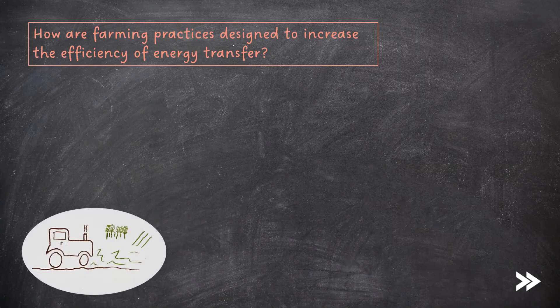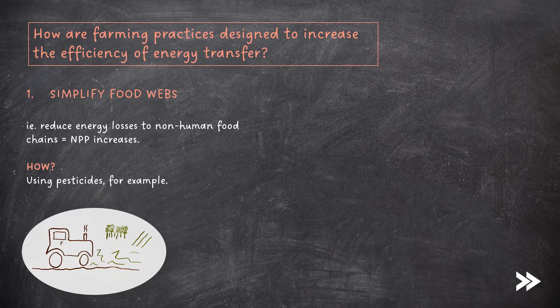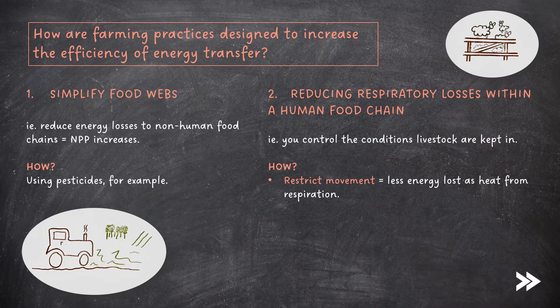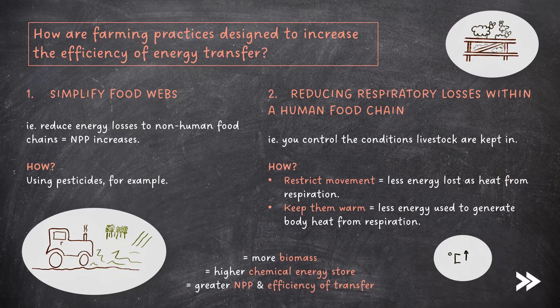Because so much energy is lost at each trophic level, farming practices are designed to maximise the efficiency of energy transfer between trophic levels. One way is to simplify food webs, reducing energy losses to non-human food chains — for example, by using pesticides so that energy isn't lost when pests feed on crops. Another way is to reduce respiratory losses within a human food chain by controlling the conditions that livestock are kept in. You can restrict their movement, meaning less energy is lost as heat from respiration, or keep them warm, meaning less energy is used to generate body heat. Overall, this means we have more biomass, a higher chemical energy store, and therefore a greater NPP and efficiency of energy transfer.